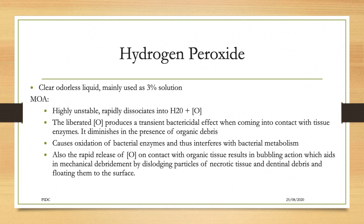Next is hydrogen peroxide. It is a clear, odorless liquid mainly used at 3%. It is highly unstable and rapidly dissociates into water and nascent oxygen. The liberated nascent oxygen produces a bactericidal effect on contact with tissue enzymes, and it diminishes in the presence of organic debris. It also causes oxidation of bacterial enzymes, interfering with bacterial metabolism. The rapid release of nascent oxygen on contact with organic tissue causes a bubbling action which helps in mechanical debridement of the canal. Nowadays hydrogen peroxide is not commonly used in irrigation, but previously it was used because of its bubbling action.